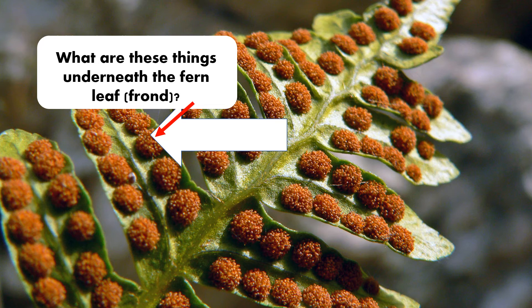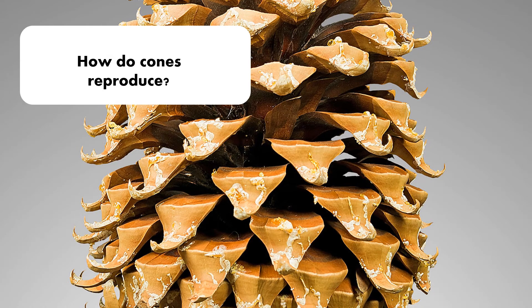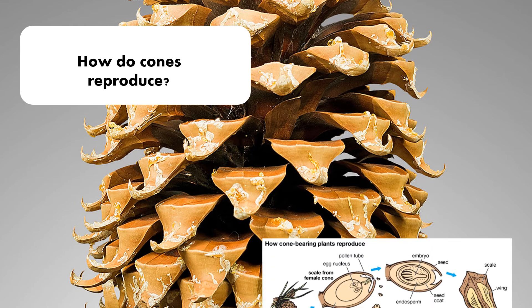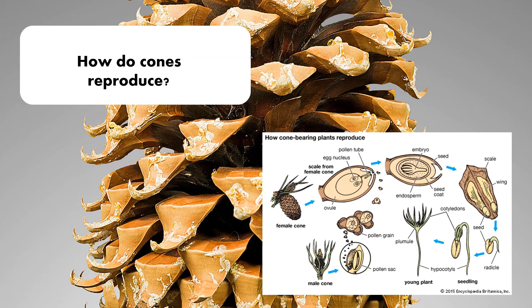Those little brown bubble things — it looks like somebody's put bubbles on it. If you thought it was some kind of insect laying an egg, you would be wrong. It is a spore — yes, those are spores. Next question: how do cones reproduce? Do you notice that this cone is not closed like the others? It has opened up, and when they open up, they release seeds. This shows how the female cone produces the seeds, and then eventually the male cone fertilizes them and off they go in the wind.